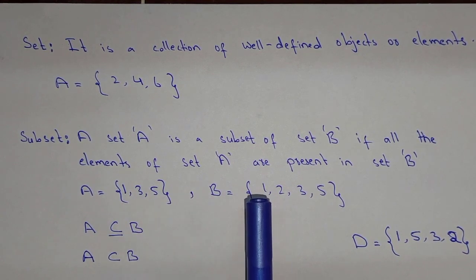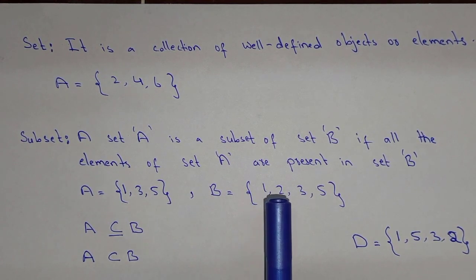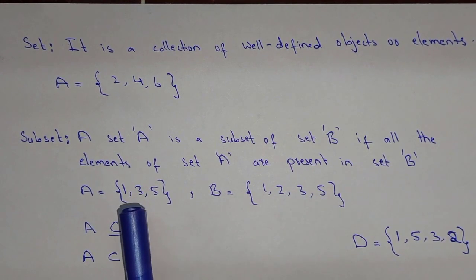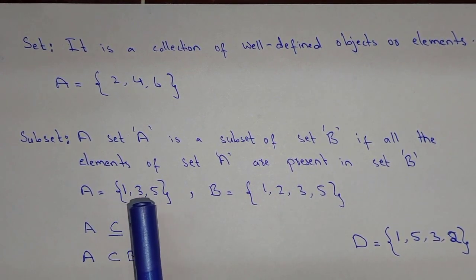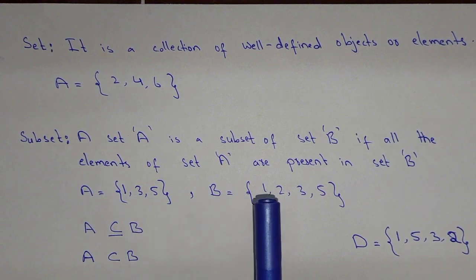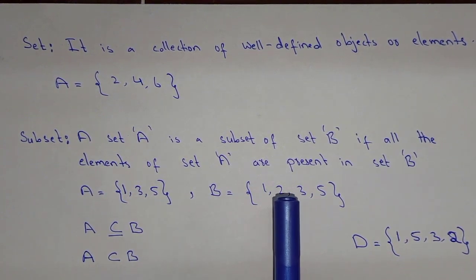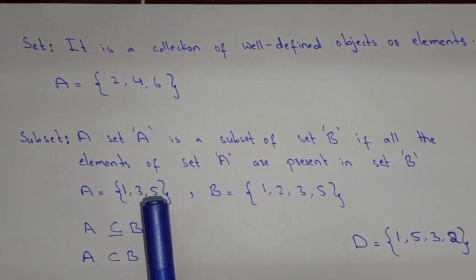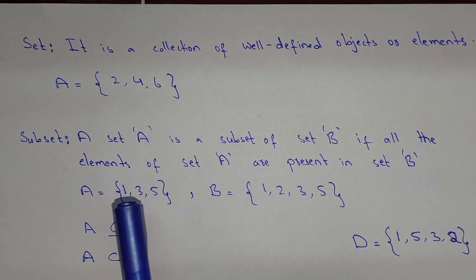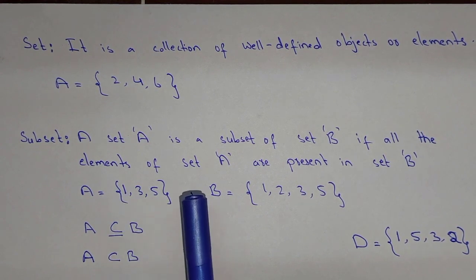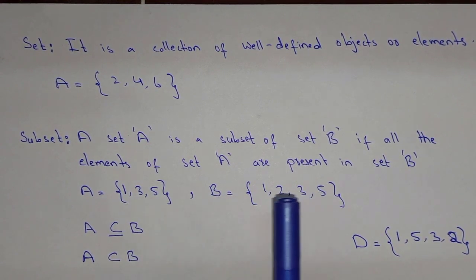And in set B, we have the elements 1, 2, 3, and 5. Now you can see that all the elements of set A are present in set B. So it means we can say that A is a subset of set B.